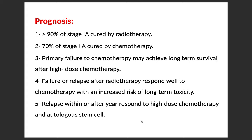Regarding prognosis, more than 90% of stage 1A are cured by radiotherapy alone. 70% of stage 2A are cured by chemotherapy. Primary failure to chemotherapy may still achieve long-term survival after high-dose chemotherapy, so there is hope even after primary failure. Failure or relapse after radiotherapy responds well to chemotherapy. Relapse within or after one year responds to high-dose chemotherapy and autologous stem cell transplantation.